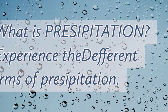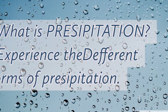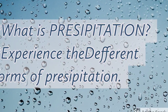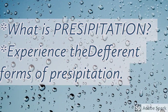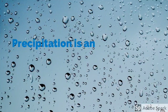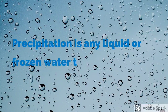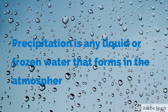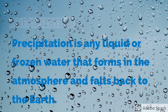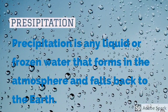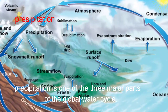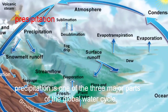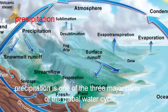In this video we have to learn what is precipitation and experience the different forms of precipitation. Precipitation is any liquid or frozen water that forms in the atmosphere and falls back to the earth. Precipitation is one of the three major parts of the global water cycle.